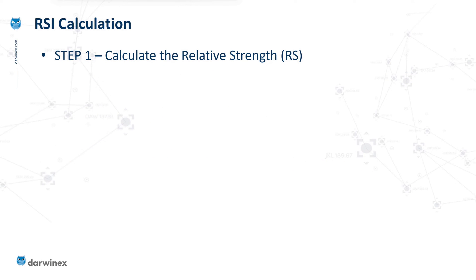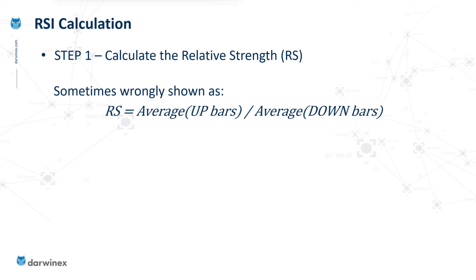Let's now take a look at the RSI calculation. A good understanding of this will allow us to apply the indicator in a more sensible way. The first stage is to calculate what's called the relative strength — now don't confuse this with the relative strength index; the two have different values, and we won't get to the calculation of the RSI until step two. When it comes to the calculation of the relative strength, I just wanted to issue a warning because I've seen lots of websites that incorrectly show how this should be calculated.